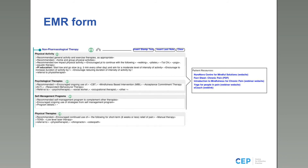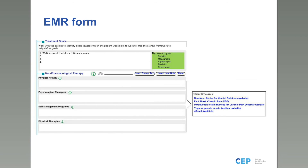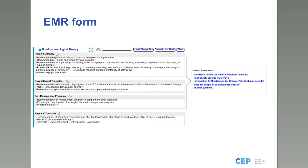When you click into any section in the follow-up form, you'll notice three buttons at the top: insert stamp text, insert last note, and clear. Insert stamp text provides pre-populated text you can tap through as needed. Insert last note populates whatever was there from the previous note — useful when the discussion was similar to last time. Clear removes everything if you want to start fresh. You can also edit anything inserted. These three options offer flexibility based on how you want to approach documentation.